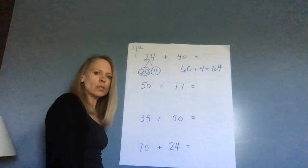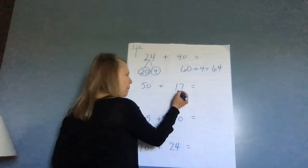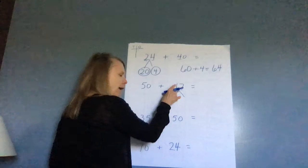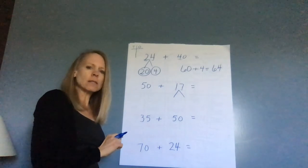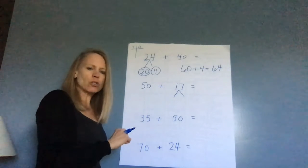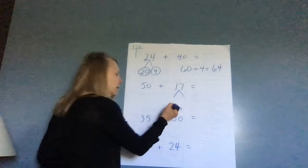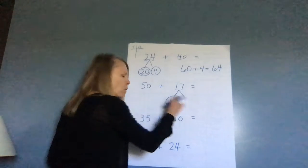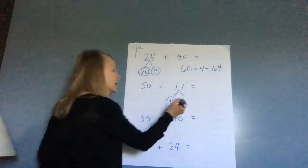I'm going to break this number apart. I have a one in the tens place. So if I have one ten, how much do I have? Ten, right? And then I have seven ones. How much do I have? Seven.